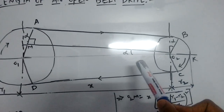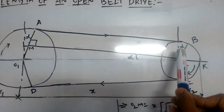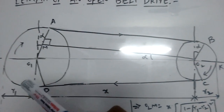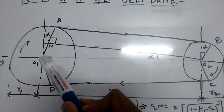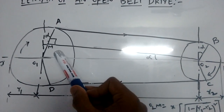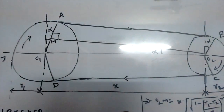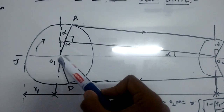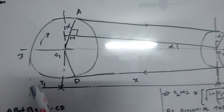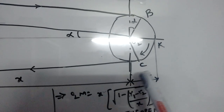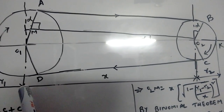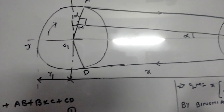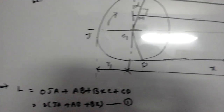Let us draw a line parallel to AB passing through point O2. From the geometry of the figure, O2M is perpendicular to O1A. Let alpha be the angle between the vertical axis and O1A. Let R1 be the radius of the first pulley, R2 be the radius of the second pulley, and X be the distance between the two centers O1 and O2.